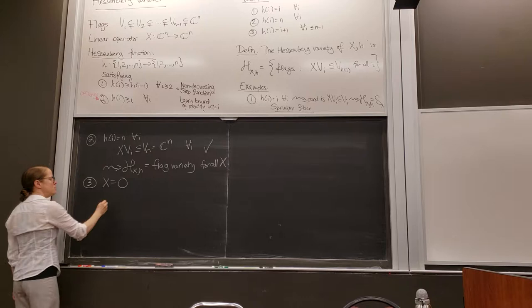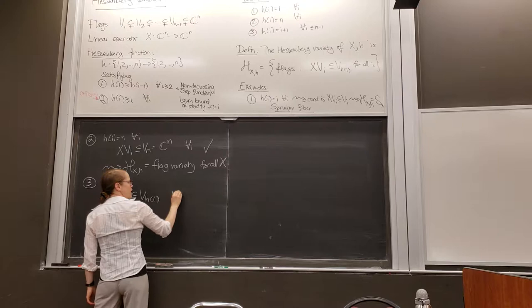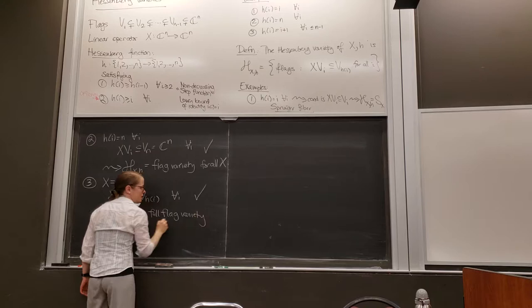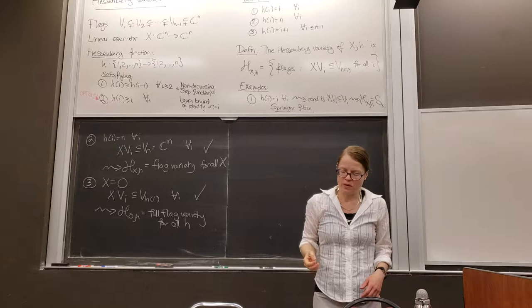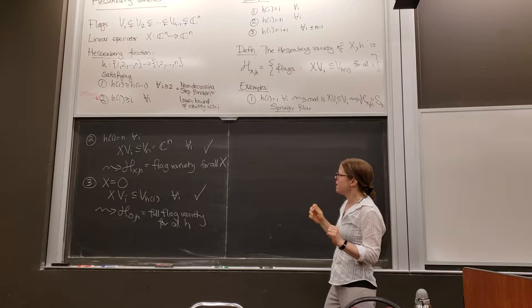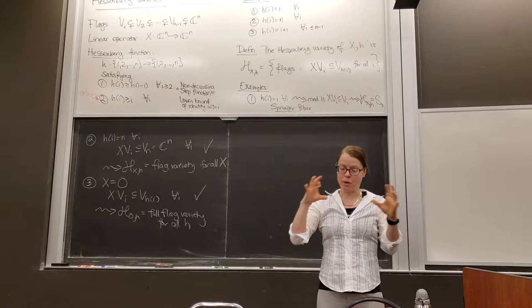I also take the example where x is the zero matrix. Then x sends the i-th part of the flag to zero, which is always contained in V_{h(i)}, so the condition is satisfied. So at least at a high level: when h gets really big, you get the full flag variety; when x gets really small, you also get the full flag variety. As x gets bigger or h gets smaller, we seem to be getting more complicated varieties.